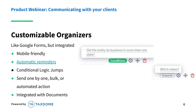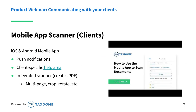Finally, you have the option to create conditional organizers, where sections or questions are hidden or displayed based on answers to a specific question. For example, if a client is not married, questions about a spouse are automatically hidden. If they are married, those spouse questions appear. This means clients won't have to sift through questions that simply don't apply to them.